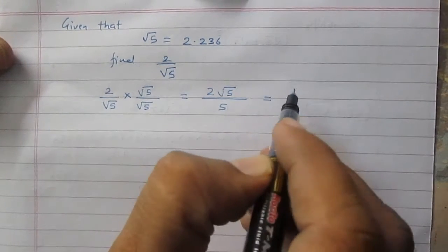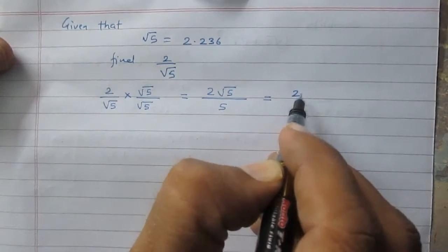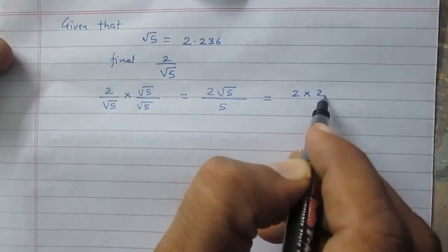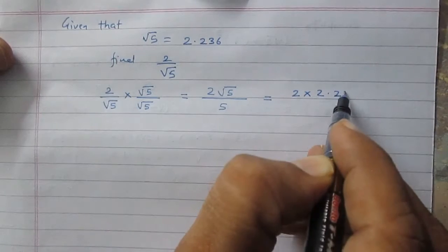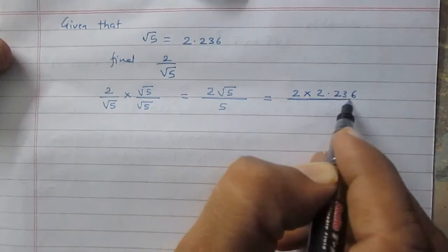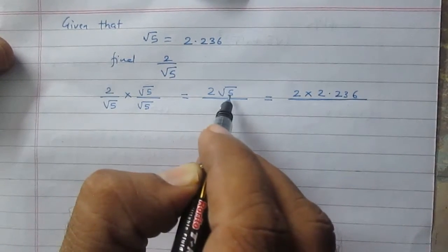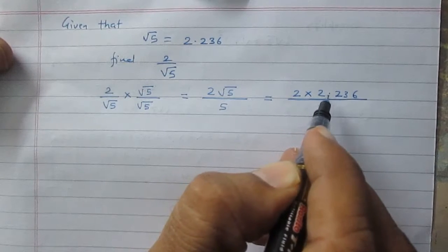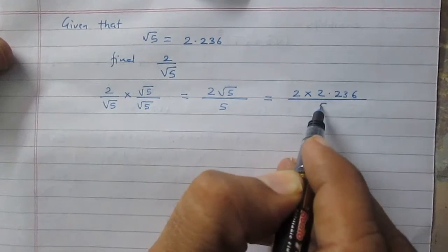Now we can substitute the value. The value of square root of 5 is 2.236. So twice of square root of 5 is twice of 2.236, and then it is divided by 5.